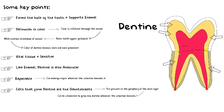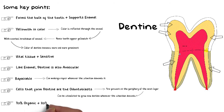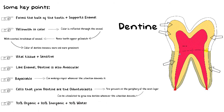The structure of dentine is made up of 70% inorganic substances, 20% organic, and 10% water. So it is not as hard as the enamel, but it is still quite tough. I'm only discussing the very basics and key points here — I will discuss each structure in detail individually in separate videos.